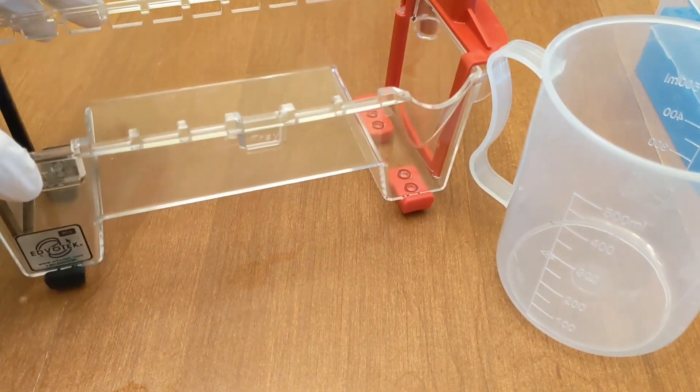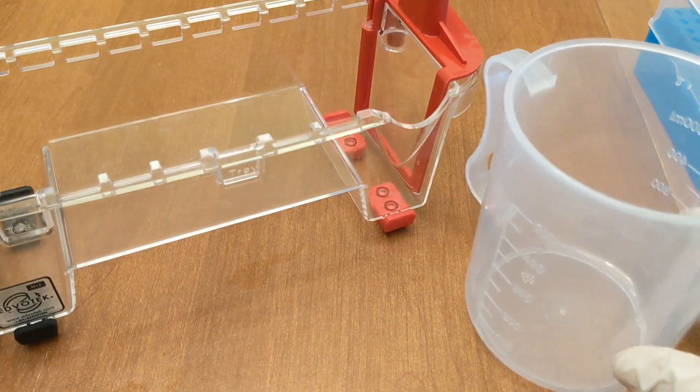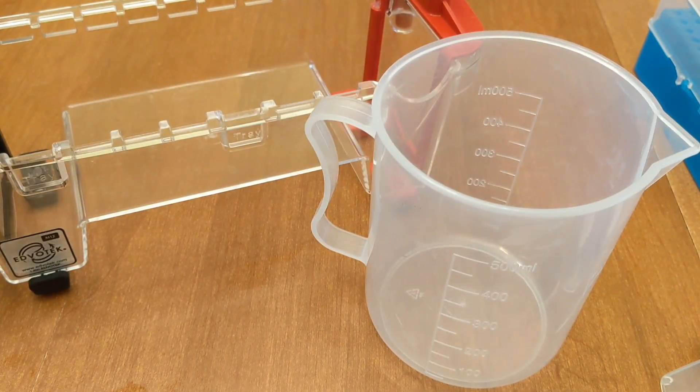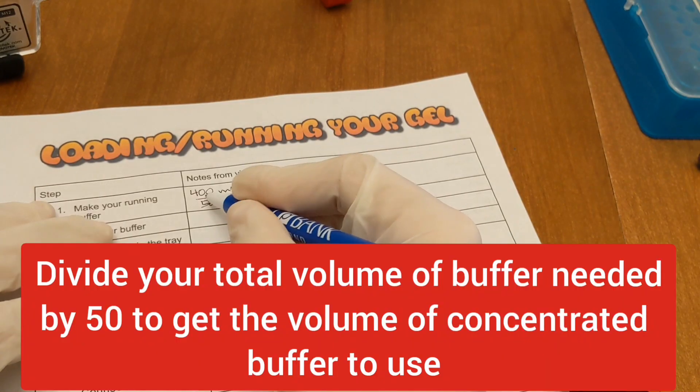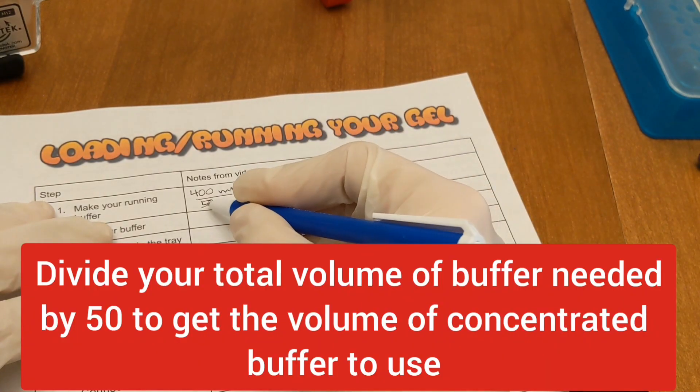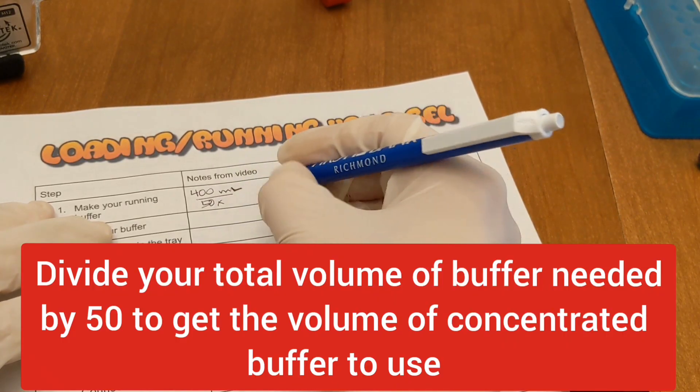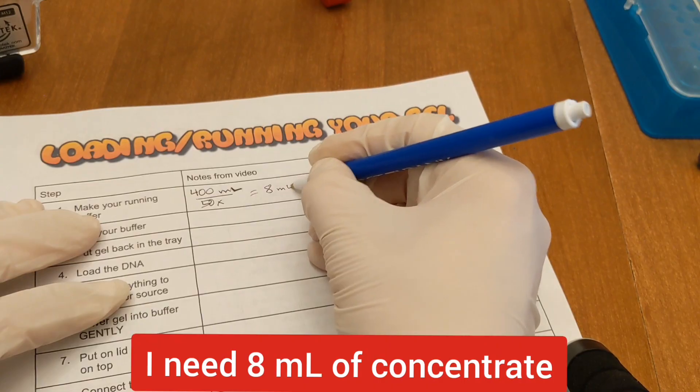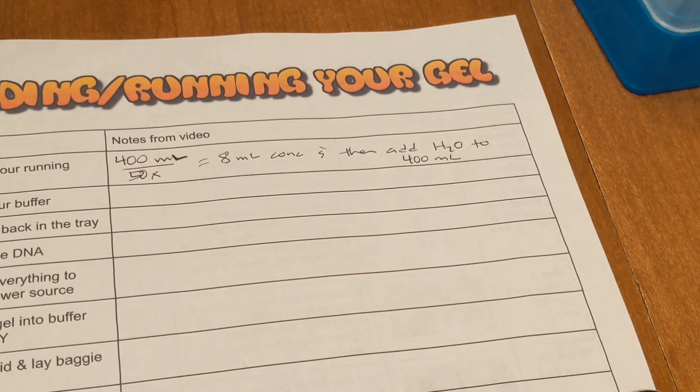We made buffer yesterday and we're gonna make buffer again today, but we're gonna make more today because this is our running buffer. So this is the buffer that will fill our chamber. I am using the Edvotec M12 which will hold 400 milliliters of buffer. So you may remember the first time what we did to dilute is we divided by 50 and that'll tell us how many milliliters of the concentrate we need. So 400 divided by 50 tells us we need 8 milliliters of the concentrate.